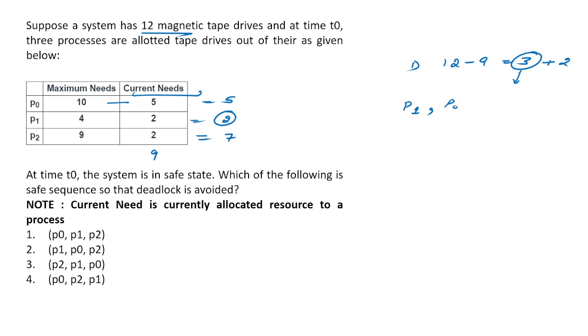So 2, nearest to 5 is 5, that is 0, and nearest to 10 is 10, which is P2. So this is the correct answer. Within 20 to 30 seconds in competitive exams, you can solve this question this way. This type of question needs practice.